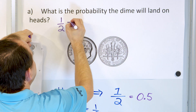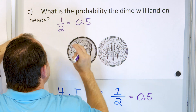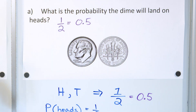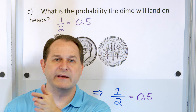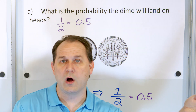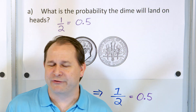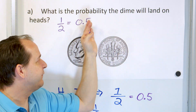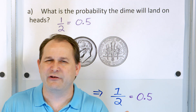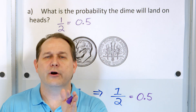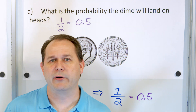Probabilities can be expressed as fractions, as decimals from zero up to one, or as percentages up to 100%. You could call this 50%, but in general in probability we don't always use percentages. So you could call it probability one half or probability 0.5.